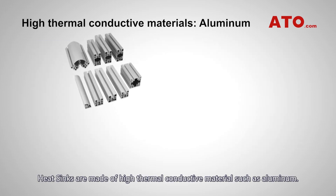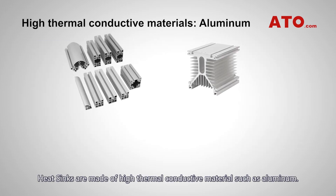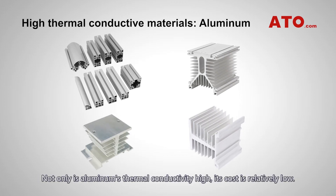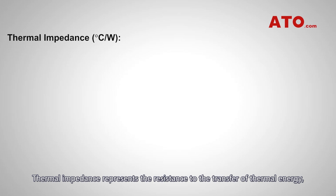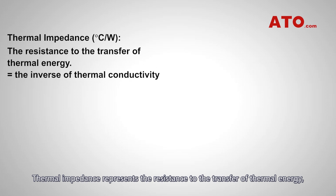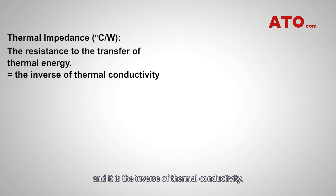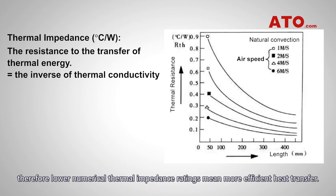Heat sinks are made of high-thermoconductive materials such as aluminum. Not only is aluminum's thermal conductivity high, its cost is relatively low. Heat sink performance is rated by thermal impedance. Thermal impedance represents the resistance to the transfer of thermal energy, and it is the inverse of thermoconductivity. Therefore, lower numerical thermal impedance ratings mean more efficient heat transfer.